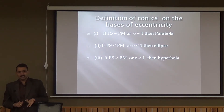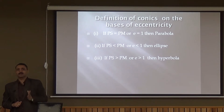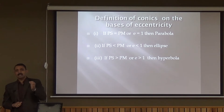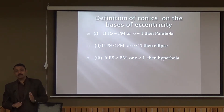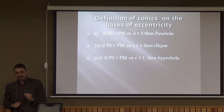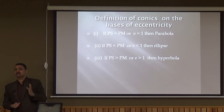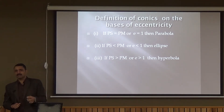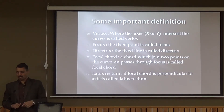If PS > PM, then E > 1, and in this case the figure is a hyperbola. So with the help of eccentricity E, we can recognize the particular conic — whether that figure will be an ellipse, a hyperbola, or a parabola.